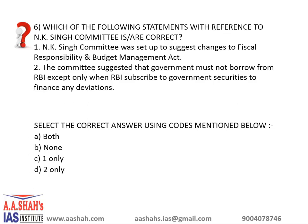Which of the following statements with reference to the NK Singh Committee is correct? First: the NK Singh Committee was set up to suggest changes to the Fiscal Responsibility and Budget Management Act. Second: the committee suggested that the government must borrow from the RBI except only when the RBI subscribes to government securities to finance any deviation. Select the correct answer: A: both, B: none, C: 1 only, D: 2 only. The correct answer here is C: 1 only.